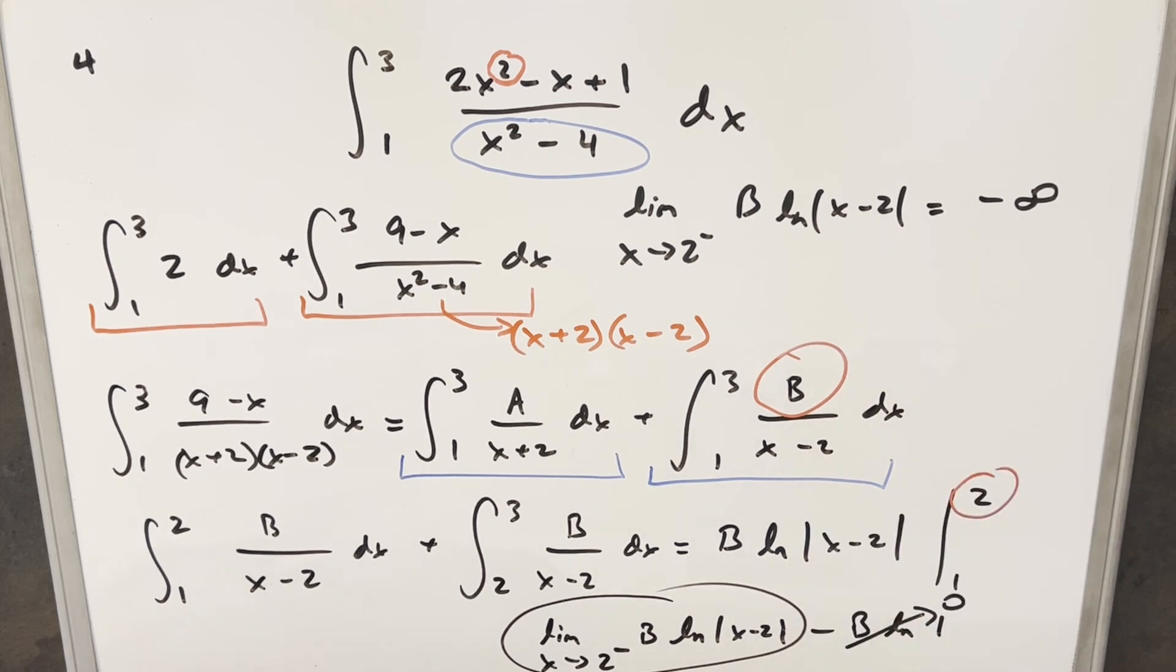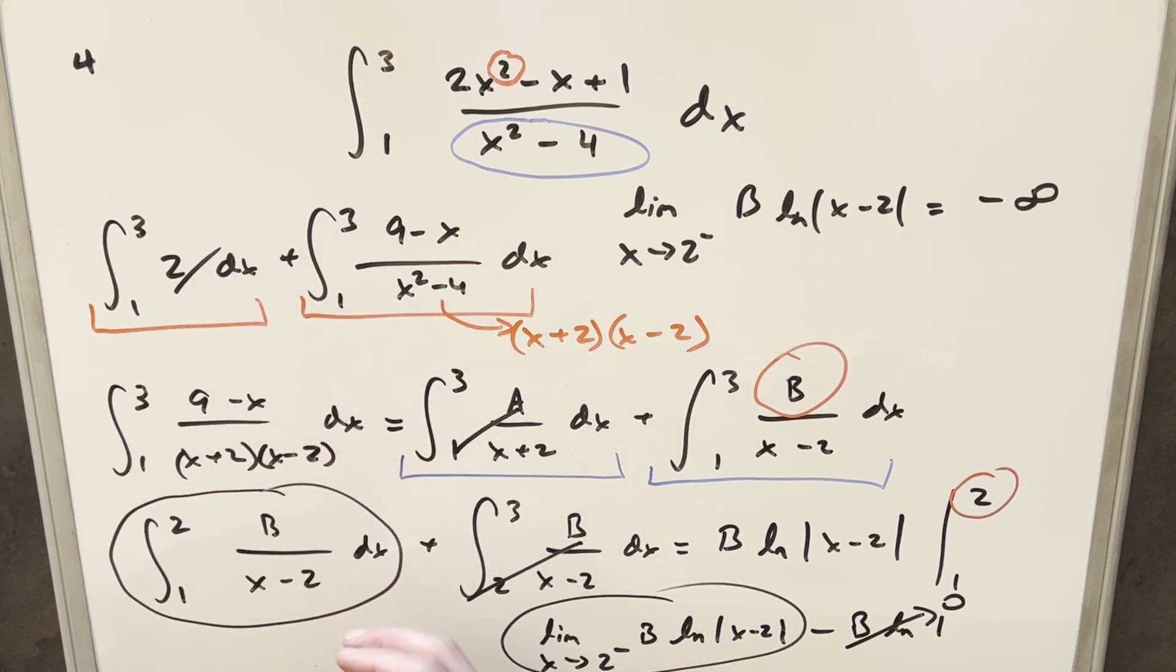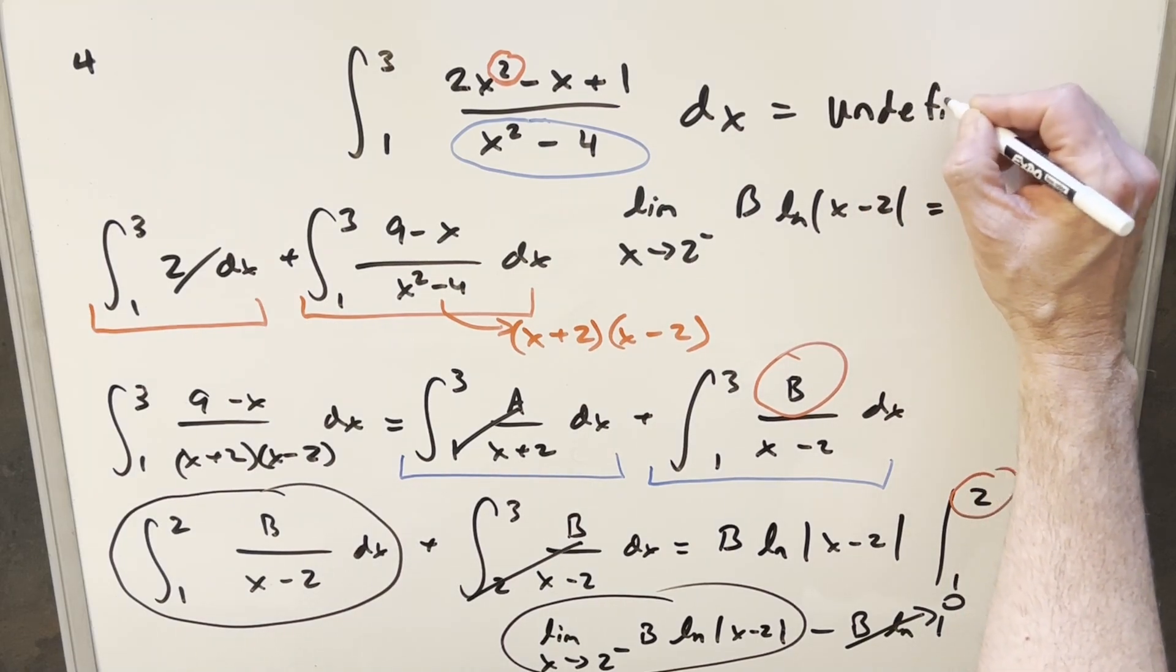But if this here is going to minus infinity, then this piece here does not converge. And because this piece doesn't converge, we really don't care what this piece is doing. We don't care what this is doing. We don't care what this is doing. If one piece doesn't converge, the whole thing doesn't converge. So for our solution to this, we can just say this is undefined or does not converge.